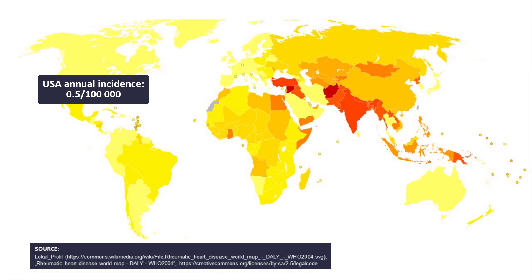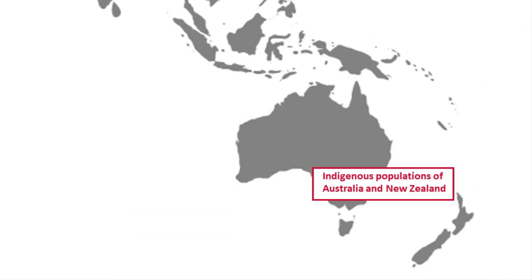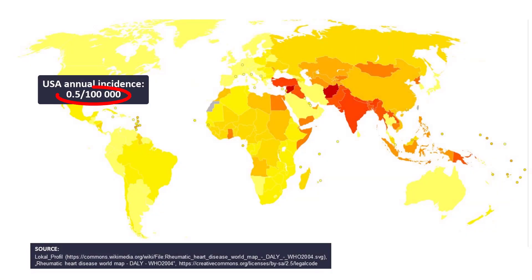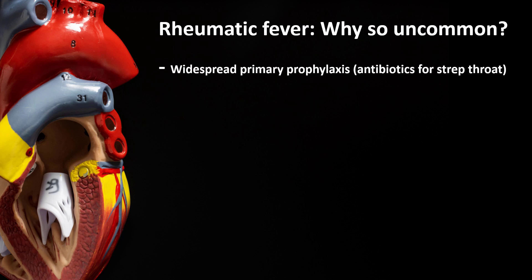To be completely precise, even in developed countries there are certain areas and certain populations where rheumatic fever is significantly more common — but if you work in these areas, you probably already know about that. Generally speaking, if you work in North America or Europe, it's highly unlikely that you will ever see a patient with acute rheumatic fever, no matter how many patients with acute pharyngitis you see every day. Now, someone might say the reason why we don't have rheumatic fever is because we treat everyone with antibiotics — and yes, antibiotics are a big reason why the incidence of rheumatic fever in developed countries is so low.